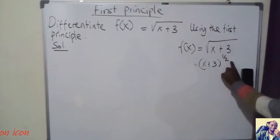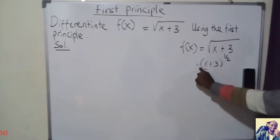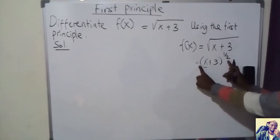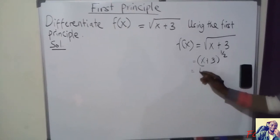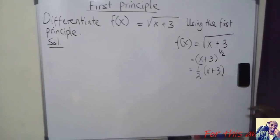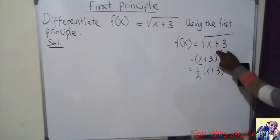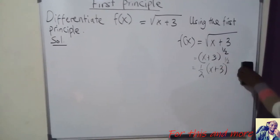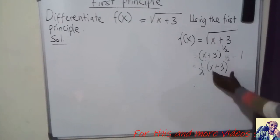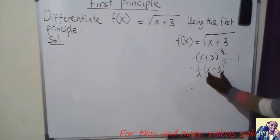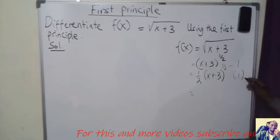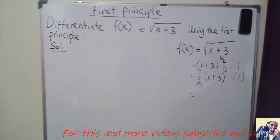When differentiating using the general form, we multiply the power with the coefficient. The coefficient here is 1, so 1 multiplied by 1/2 gives 1/2. Then (x + 3) remains, and the power reduces by 1, giving 1/2 minus 1. We also differentiate what is inside: differentiating x gives 1, so we multiply by 1. We've used the chain rule.